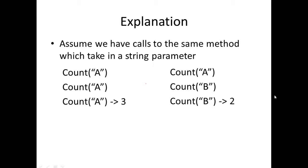Here's another example with the same method, but this time we're passing in different values. We call count and pass in 'a' - that returns one. But then we call this method again and pass in a different value 'b', and the value returned would be one, because this is an entirely new value - we've switched from 'a' to 'b'.